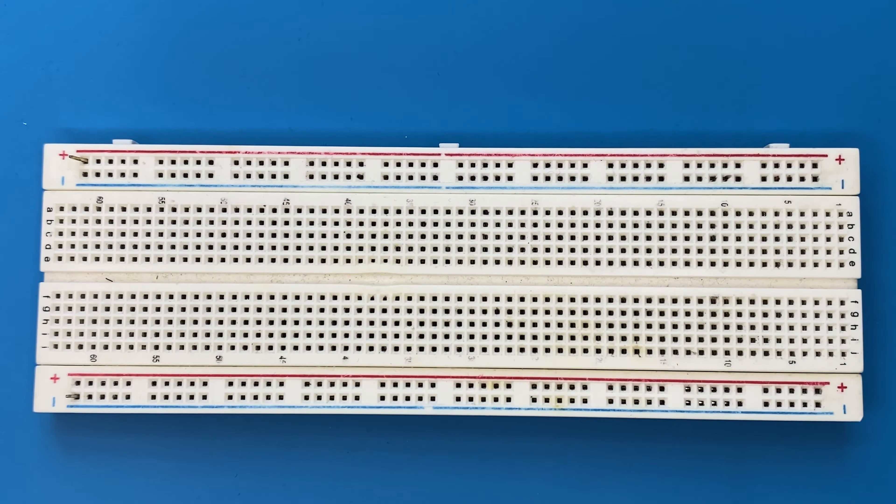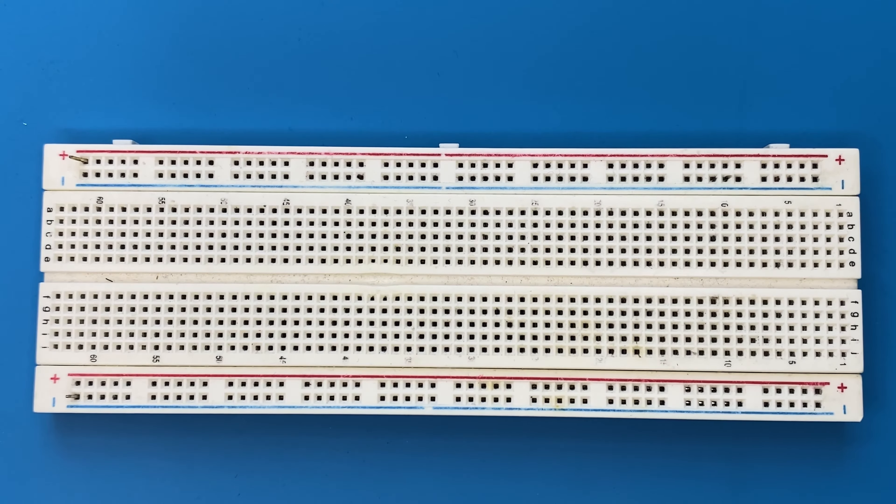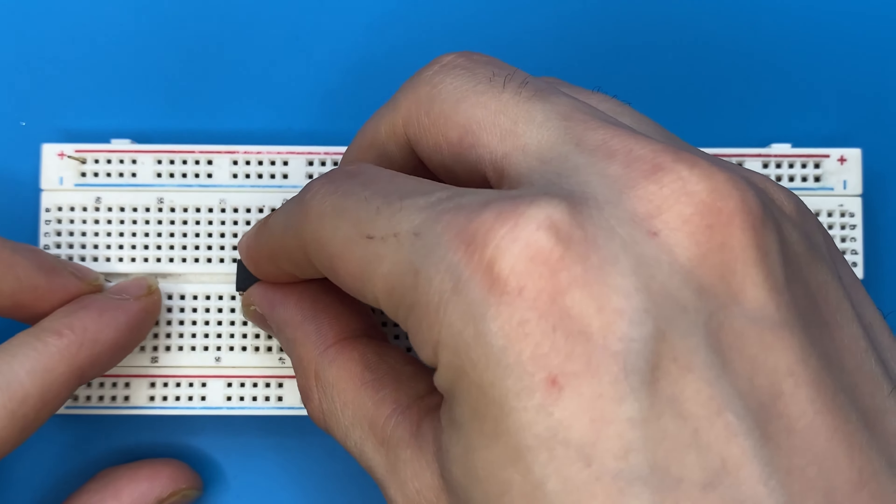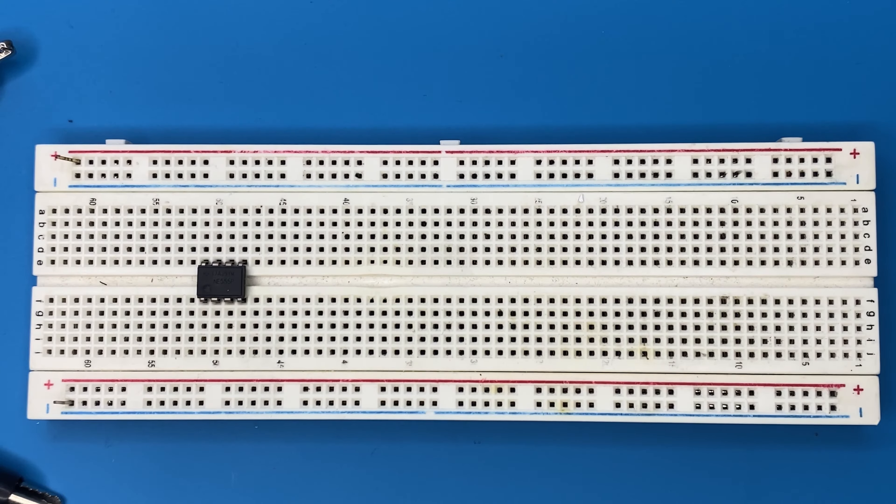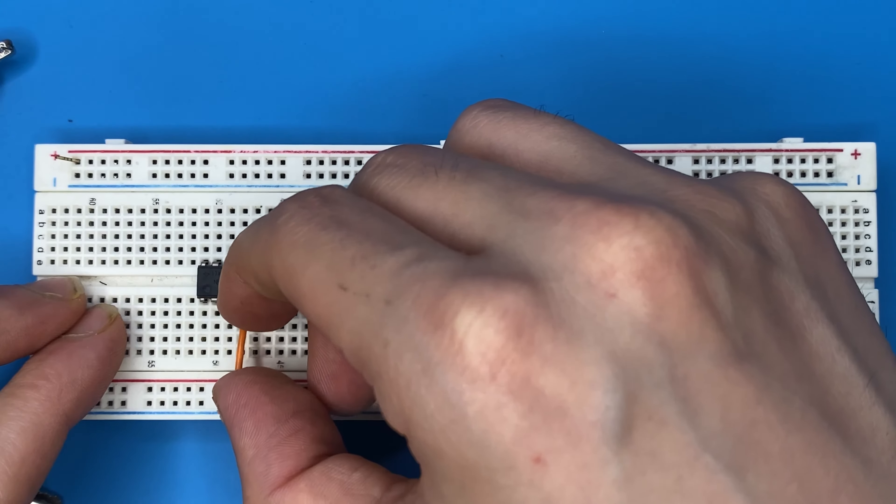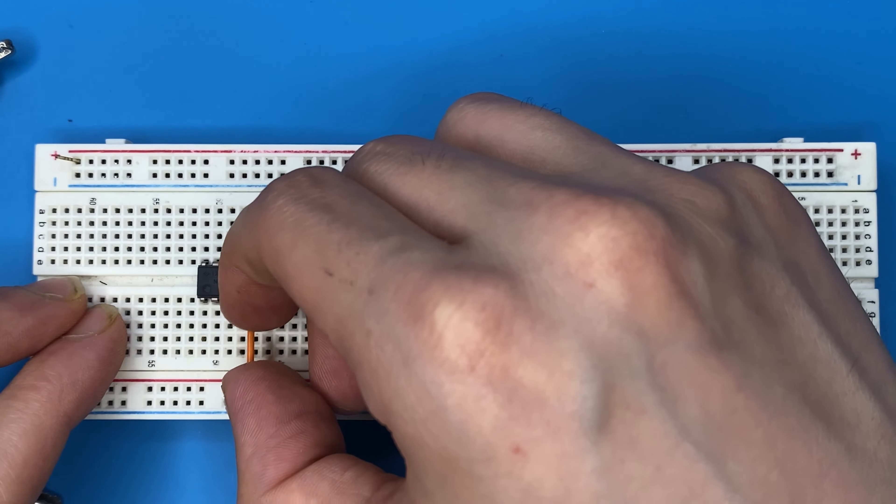Let's go ahead and connect our timer IC to the breadboard. Connect pin 4 and pin 8 of the IC to the positive rail of the breadboard.